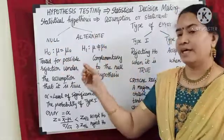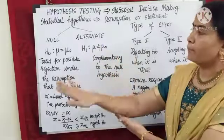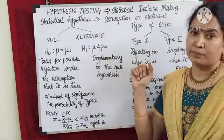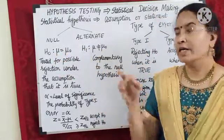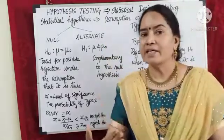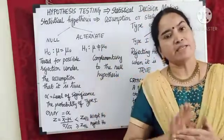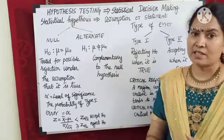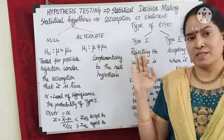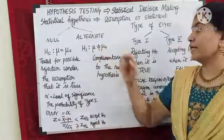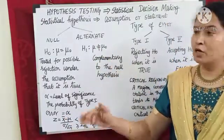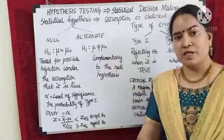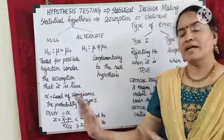The alternate hypothesis, denoted H₁, is the complement to the null hypothesis. For H₀: μ = μ₀, we can state H₁ in three ways: μ ≠ μ₀, or μ > μ₀, or μ < μ₀. All these are called the alternate hypothesis. In words, the alternate hypothesis is a hypothesis complementary to the null hypothesis — just the reverse of it.